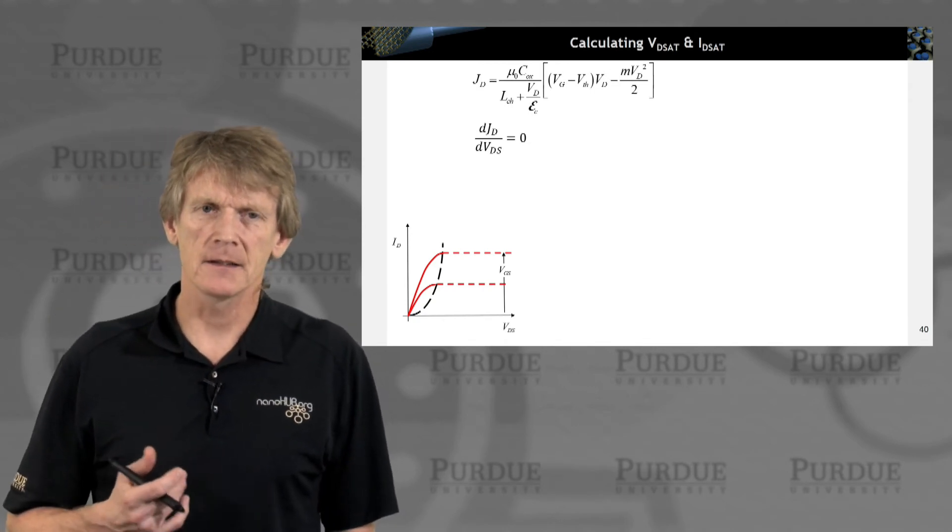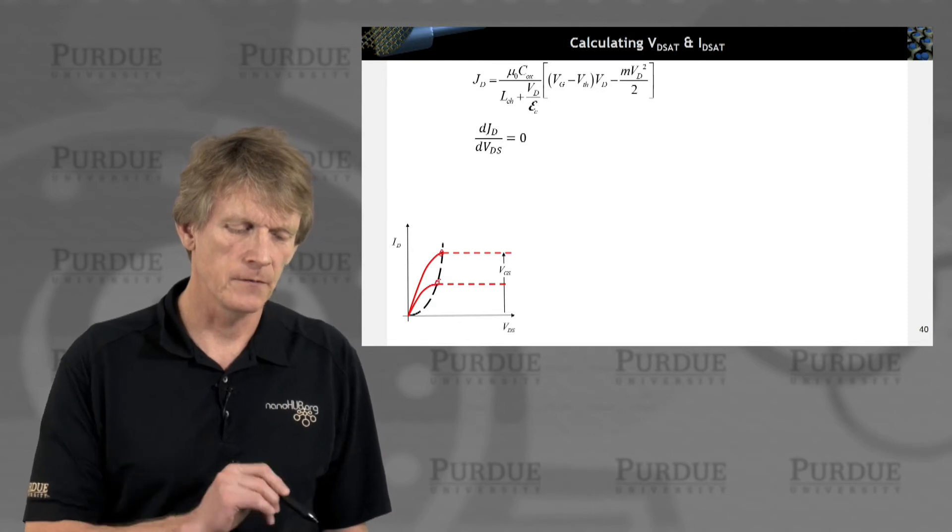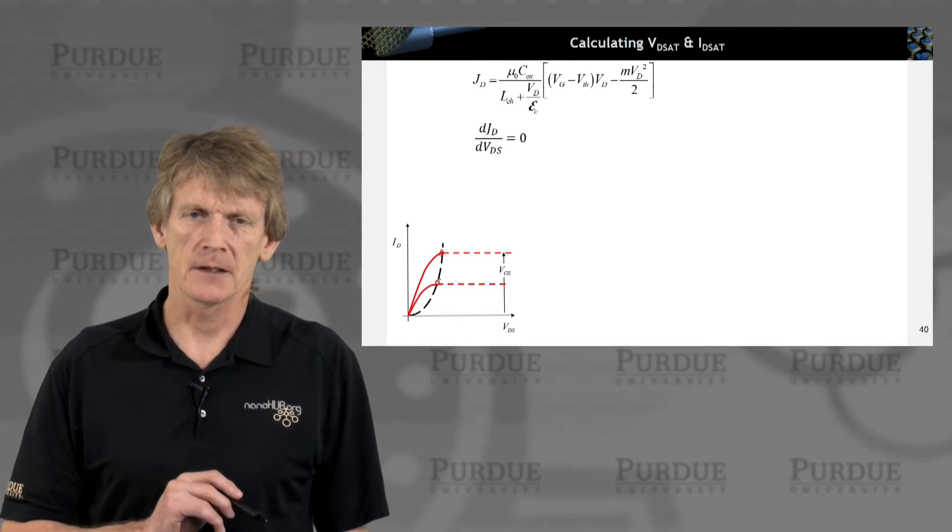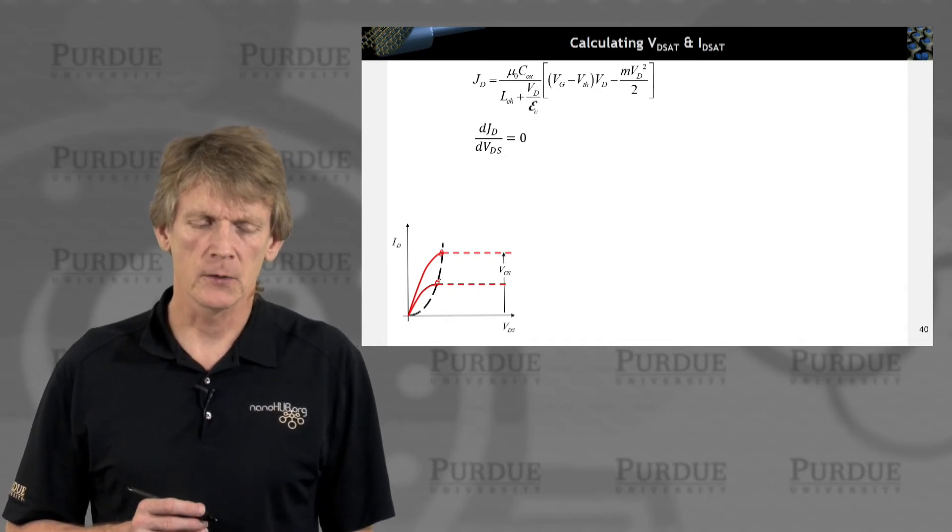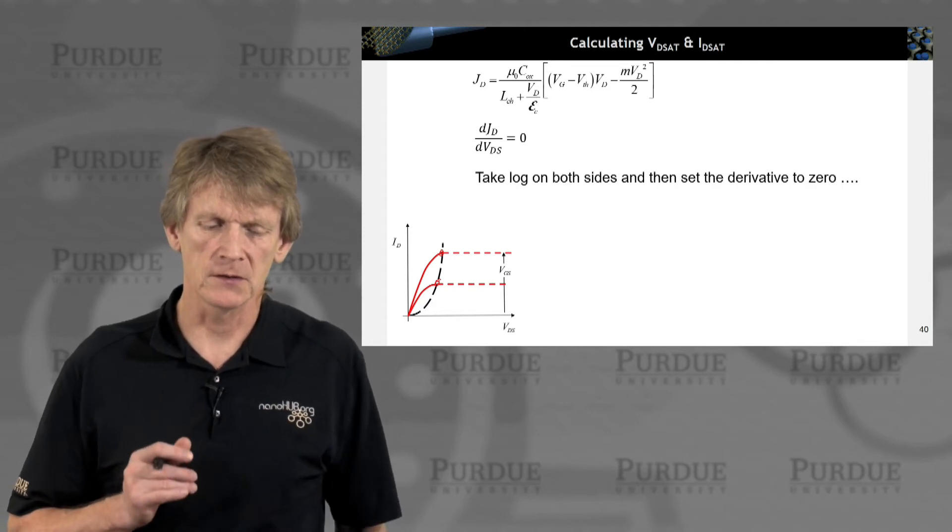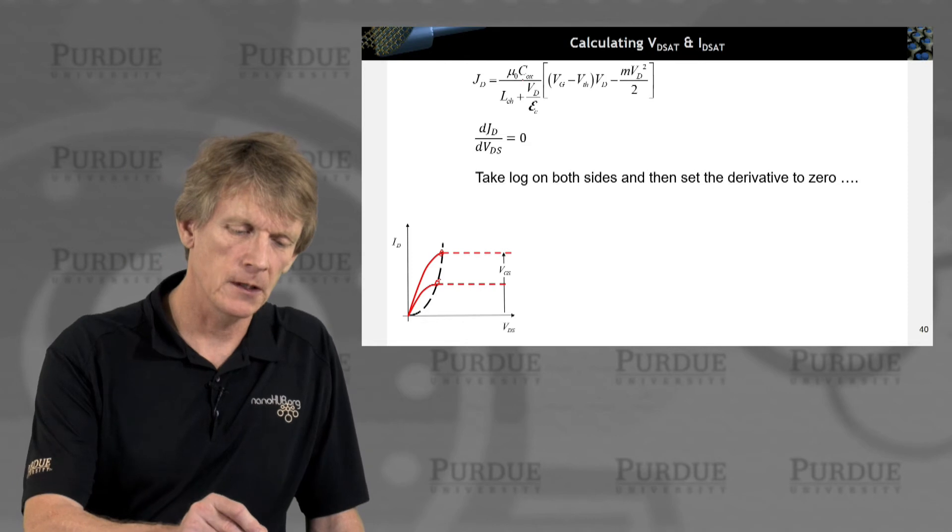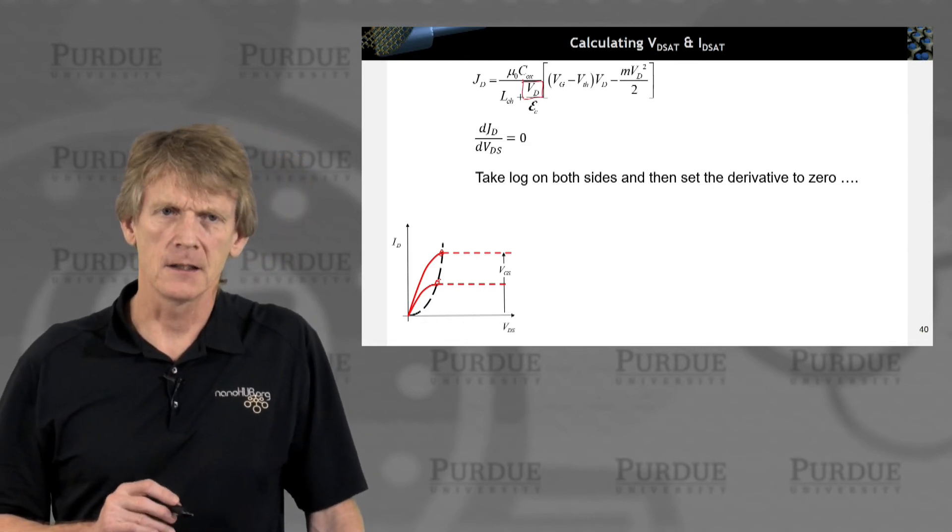So let's calculate Vdsat and Idsat, these saturation voltages here that saturate the current. Again, we just set the differential with Vds to 0, find the maximum of this parabolic-like expression, but remember now we have Vd in here also in the denominator,